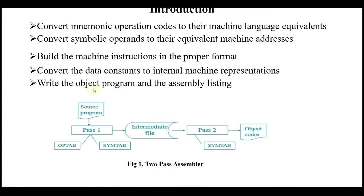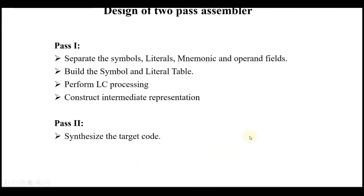In this figure we can see that in pass one, the source program, opcode table (MOT), and symbol table (SYMTAB) are the inputs. After pass one, we get an intermediate file, which is passed to pass two. With the help of SYMTAB generated by pass one, we get the object code.